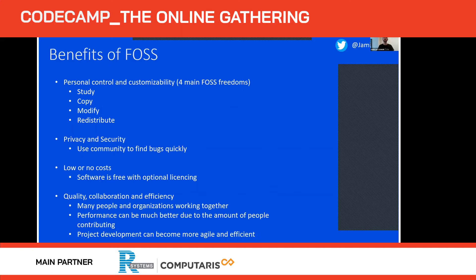Open source software is generally free, which is great if you just want to play around with the technology. When you get to the point where you want to shout at someone because something's broken, that's when you look at optional licensing. Then there's quality, collaboration, and efficiency: loads of people working together all over the world aids collaboration. I could make a pull request right now, someone in China could look at it, and by the time I wake up I have a response.